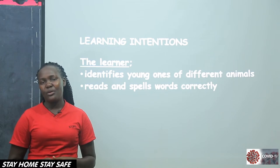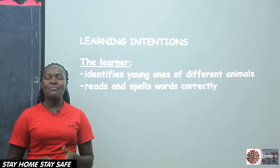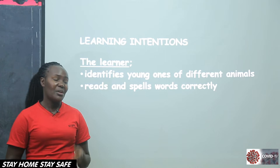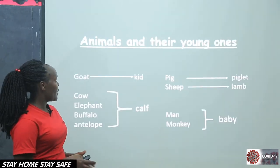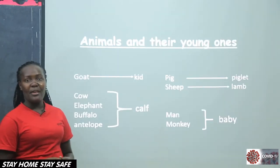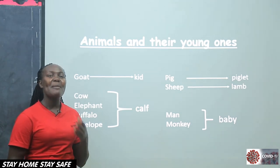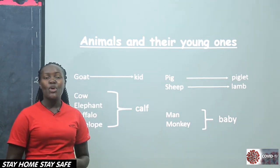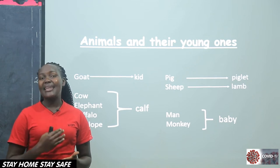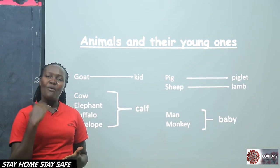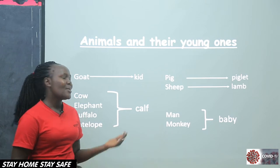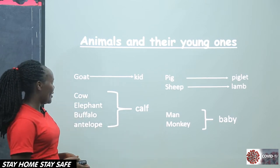I call upon your attention so that you can be able to pronounce the words correctly. Animals and their young ones — I'm talking about the parents. Just as you have a parent, there is a name we give to the young one of your parents. You are a child. So, this is really fun.